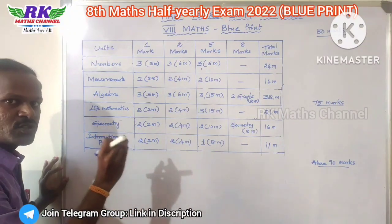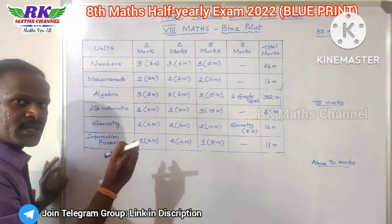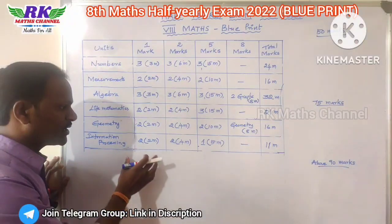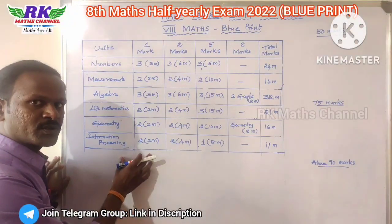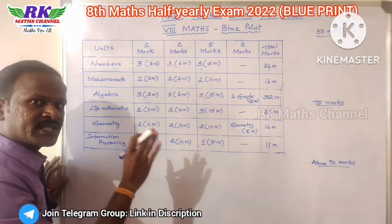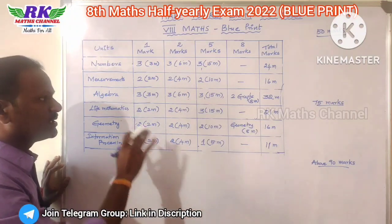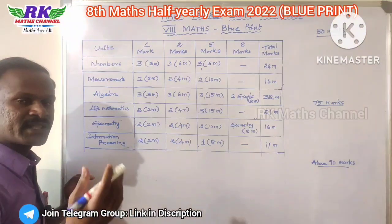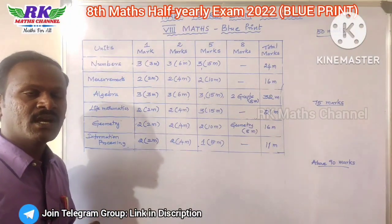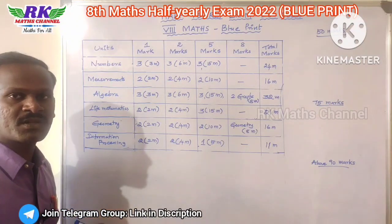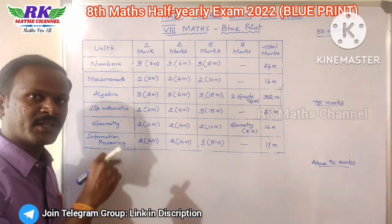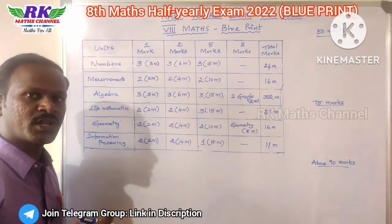In the seventh unit, there is also a little content. There is also an HCF topic. Up to December, you can see that. That's why you can see important two marks and five marks questions. You can see that in the description — also the questions.